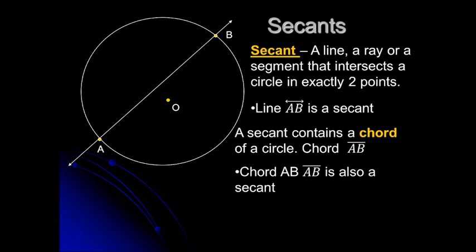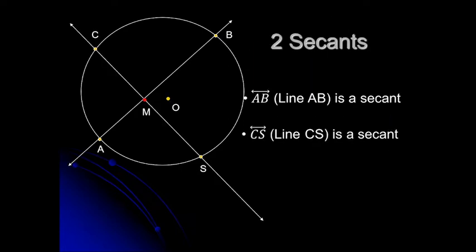A secant is a line, ray, or segment that intersects a circle in exactly two points. In the figure, there is one and only one secant drawn in circle O — this is secant AB. We put a symbol on top of AB, a line with a double-headed arrow, to signify that the secant is a line. Note that a secant contains a chord — this is chord AB. We put a bar on top of AB to symbolize that AB is a line segment. Since by definition a secant intersects the figure at two distinct points, chord AB can also be called secant AB.